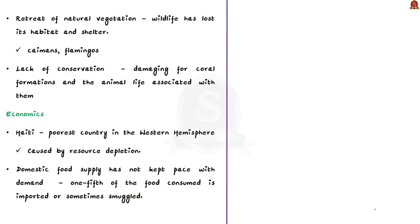With the retreat of natural vegetation, wildlife has lost its habitat and shelter. Haiti used to have wild boars, guinea fowls, and wild ducks, but because of lack of vegetation, most of these animals are no longer present. Currently, some caimans are found in the southern peninsula and some flamingos are found on Gonâve Island. The government did not take major steps to conserve flora and fauna. Haiti is known for its corals, but due to lack of conservation, most corals are damaged.